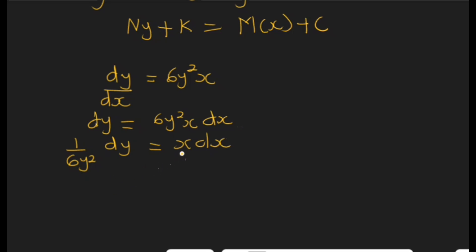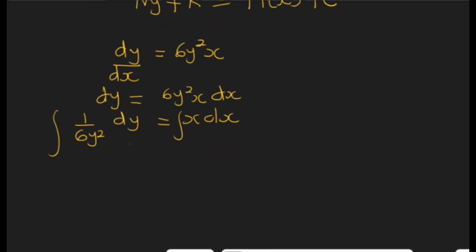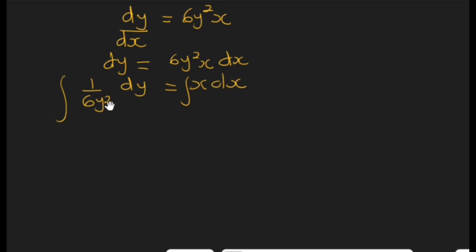After this separation, our goal is to remove the derivatives. From our tutorial here, you realize that you take integral on both sides. When you take this integral on both sides, you just solve it as you've done in calculus. 1 over 6y², how do we integrate this?